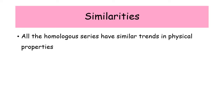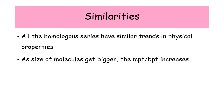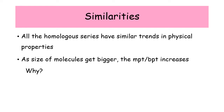Whenever we are looking at our homologous series, there are some trends in physical properties that are the same between the series. The main one being that as the molecule gets bigger, the melting and boiling point increases. This is true for alkanes, alkenes, cycloalkanes, alcohols, and carboxylic acids. The reason is stronger intermolecular forces — as the molecule gets bigger, the intermolecular forces get stronger.